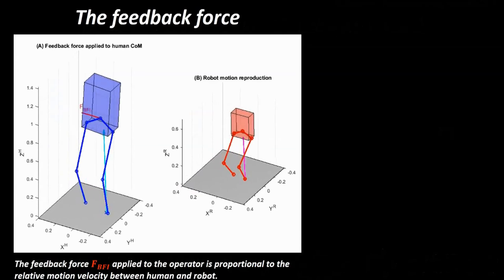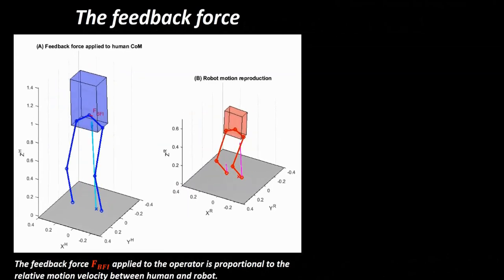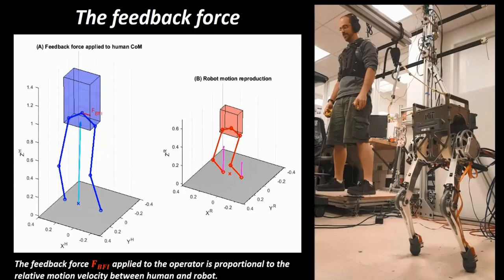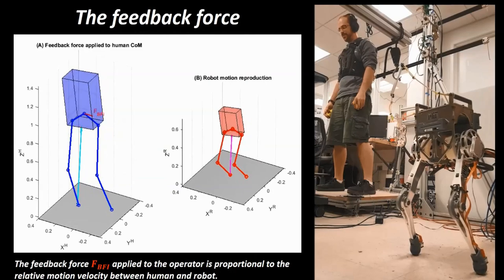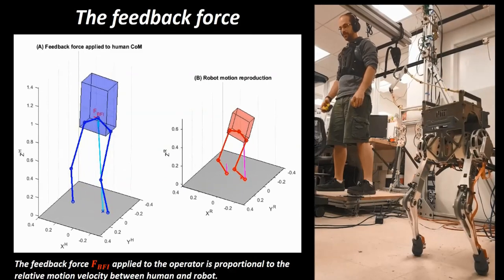Additionally, a feedback force, shown in red, is applied to the operator to make sure that the human movement is synchronized with the motion of a much smaller and lighter robot. This force is proportional to the relative motion velocity between human and robot.